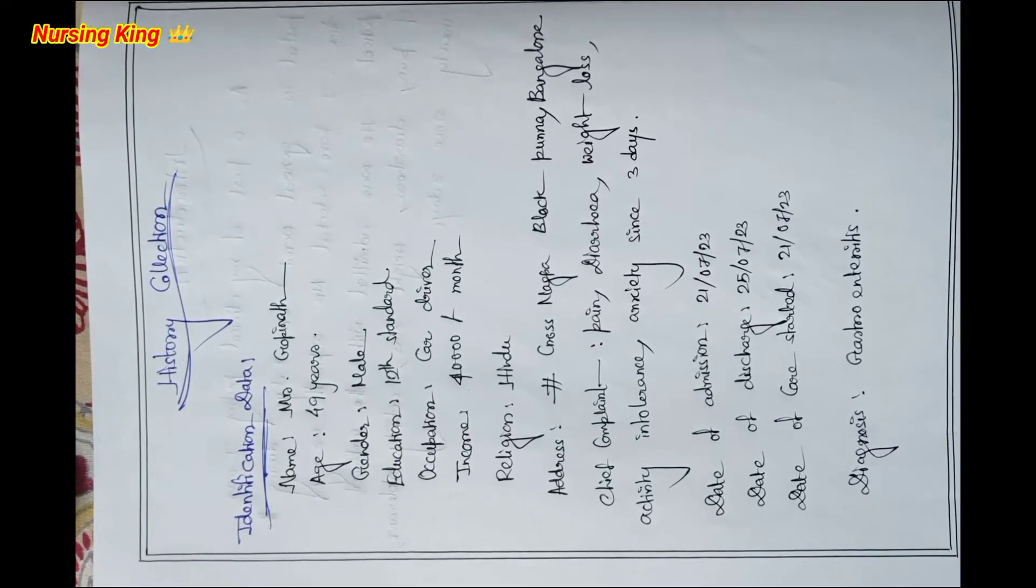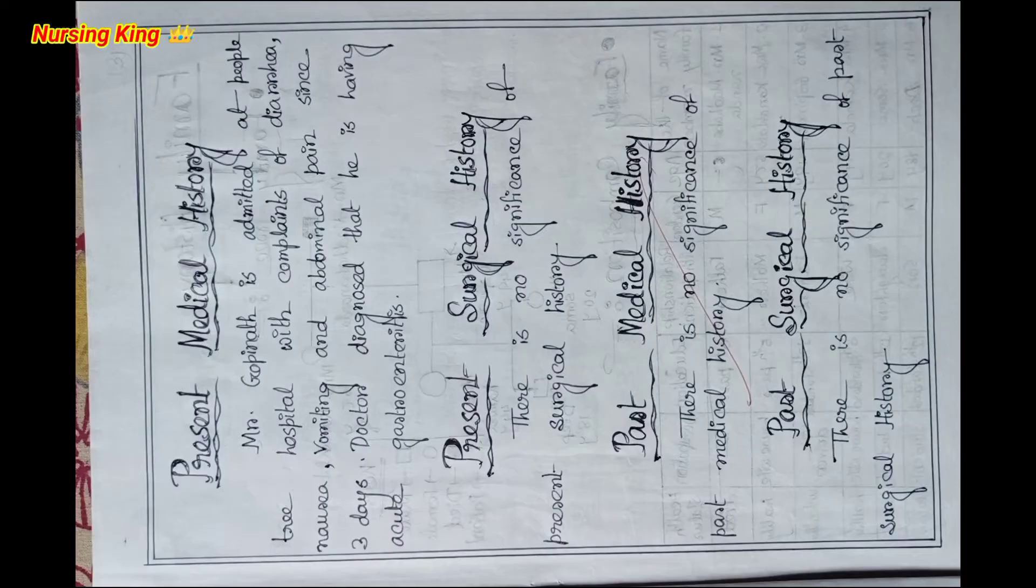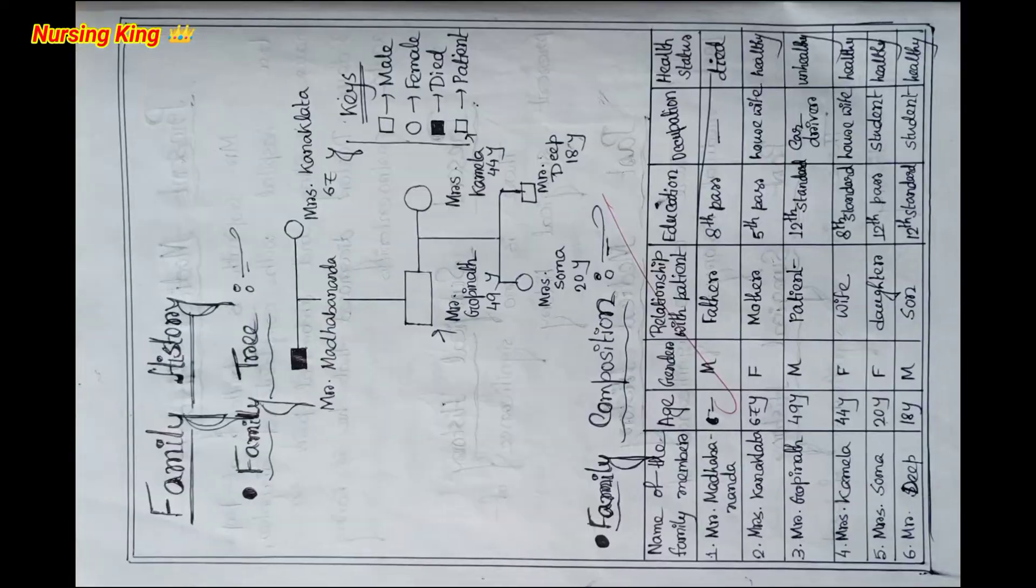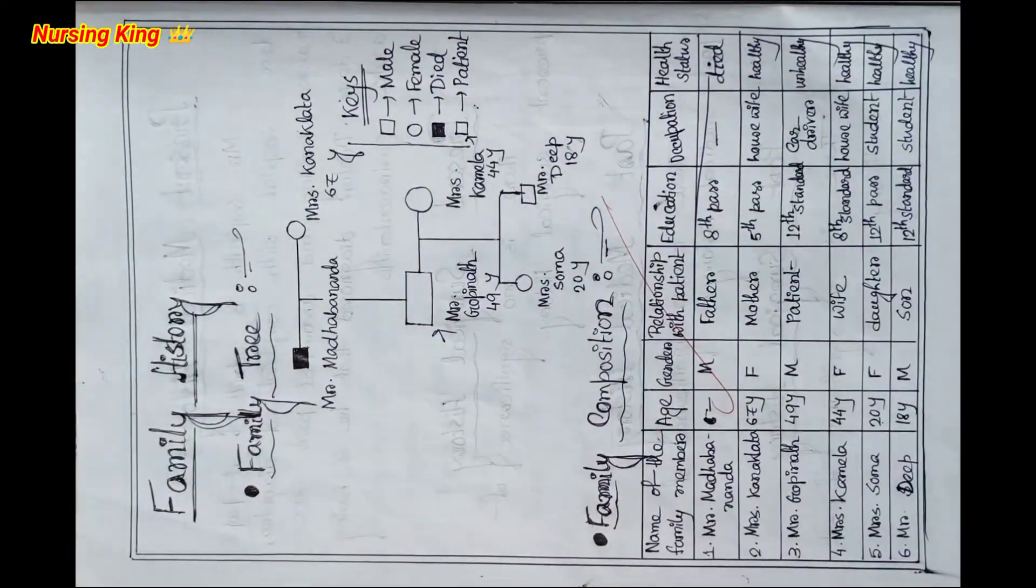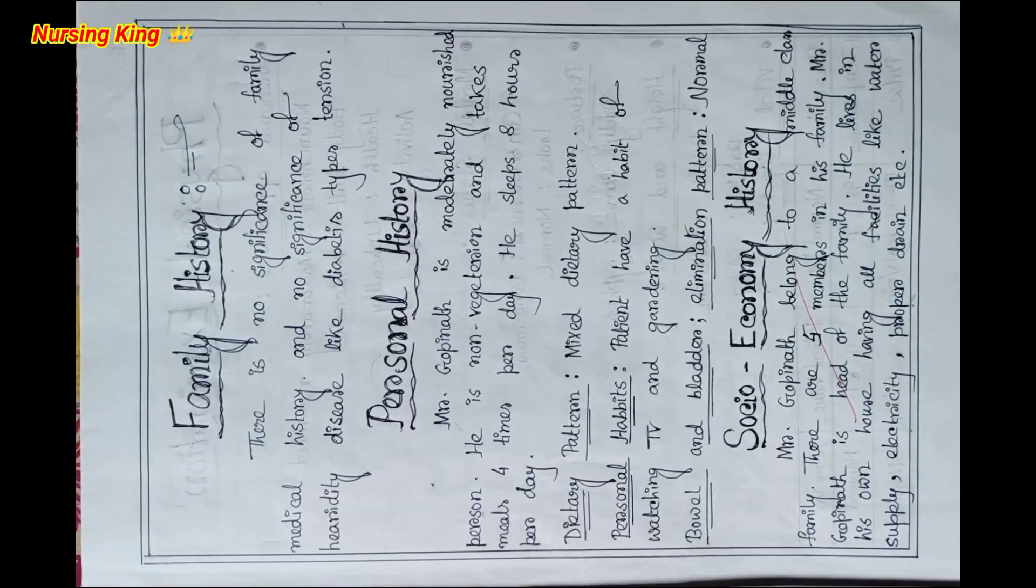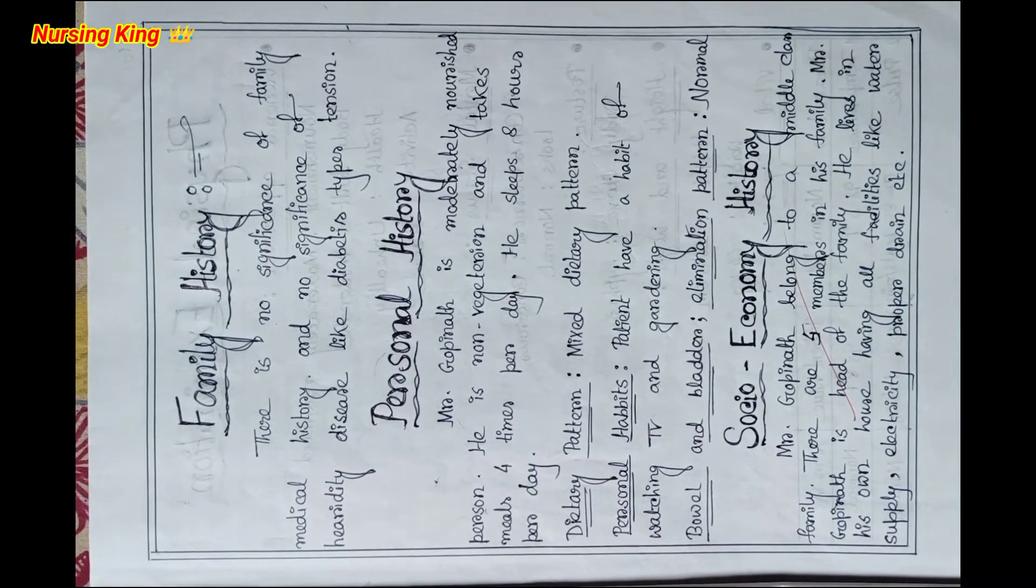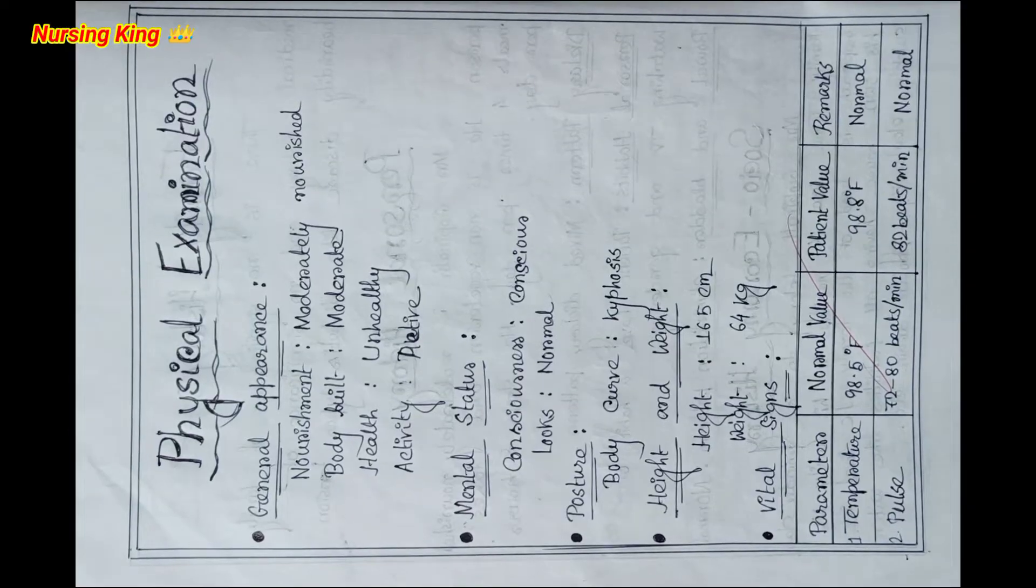After identification data, document the patient's past surgical and medical history, then family history including family tree and family composition. Also include personal history and socioeconomic history. You have to write everything.